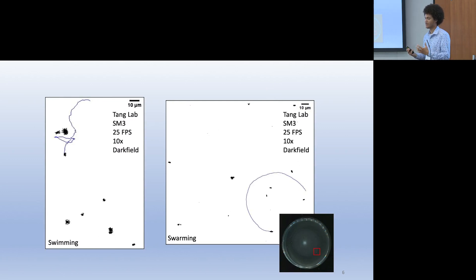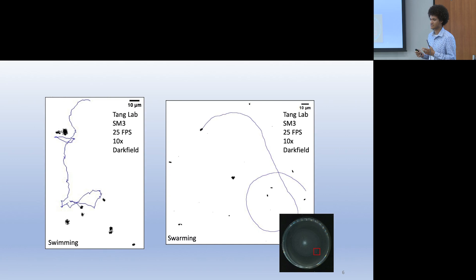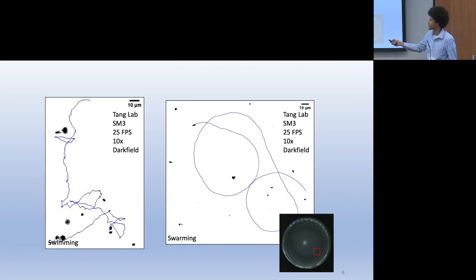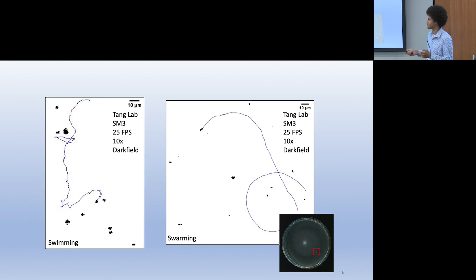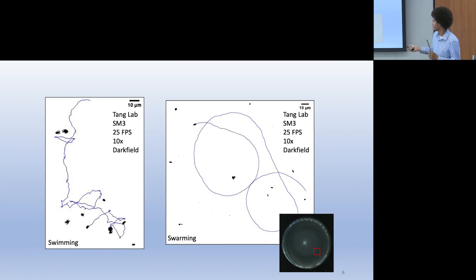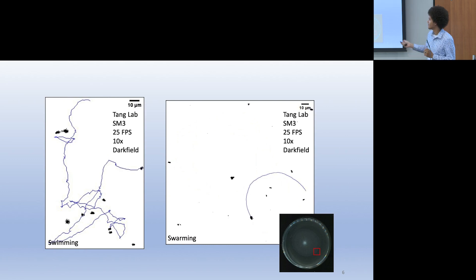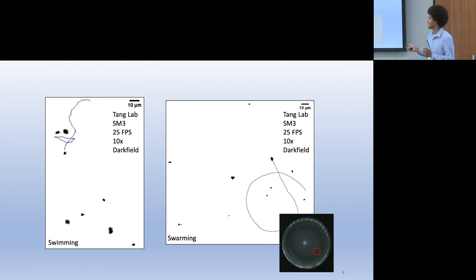The first step to extracting run-and-tumble parameters was to take movies of these cells and perform a tracking method to get their trajectories. On the left, SM3 is captured at 25 frames per second at 10x using darkfield microscopy. For the swimming cell — grown in nutritional medium in a shaking incubator and plated on a microscope slide — its trajectory is very jagged with a lot of tumbles. On the right, a cell grown in a swarm on a plate, picked from the swarm front and diluted, shows a very smooth trajectory by comparison, with only one or two tumbles over a comparable length.